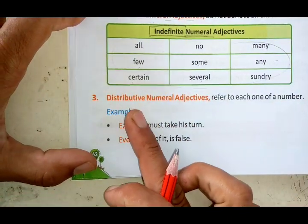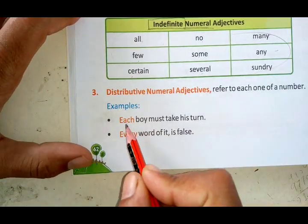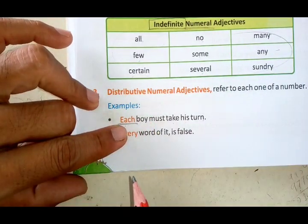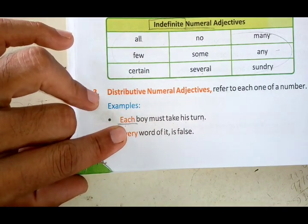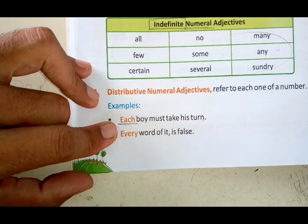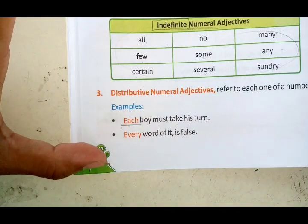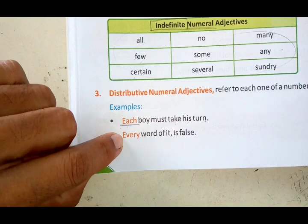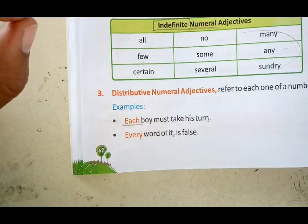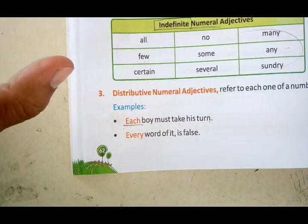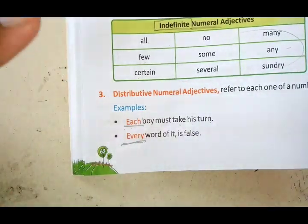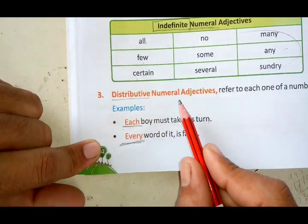The third type is distributive numeral adjectives. For example: 'Each boy must take his turn' — each means everyone; the distribution has happened among all the boys. 'Every word of it is false' — every word means all of it is distributed. That's why these are known as distributive numeral adjectives.